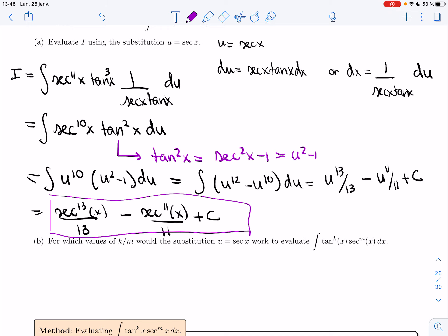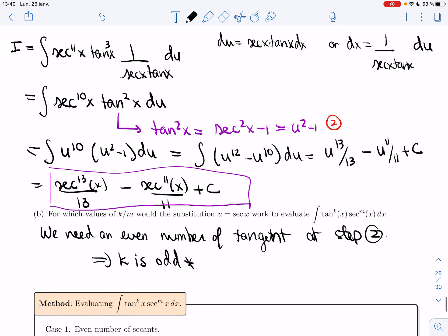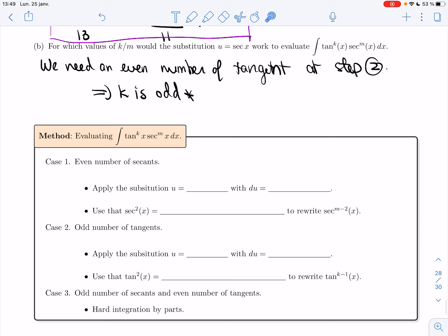Same question as before - for which values of k and m would this substitution work to evaluate this integral? Same step is important. This step. I need an even number of tan at that step. And so we need - let's see - an even number of tangent, then we had gotten rid of 1, so I need an odd, so k is odd.